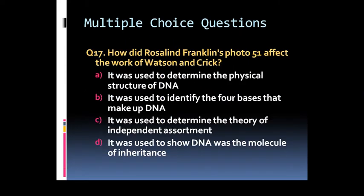Question 17: How did Rosalind Franklin's photo 51 affect the work of Watson and Crick? Options are option A: It was used to determine the physical structure of DNA. Option B: It was used to identify the four bases that make up DNA. Option C: It was used to determine the theory of independent assortment. Or option D: It was used to show DNA was the molecule of inheritance.